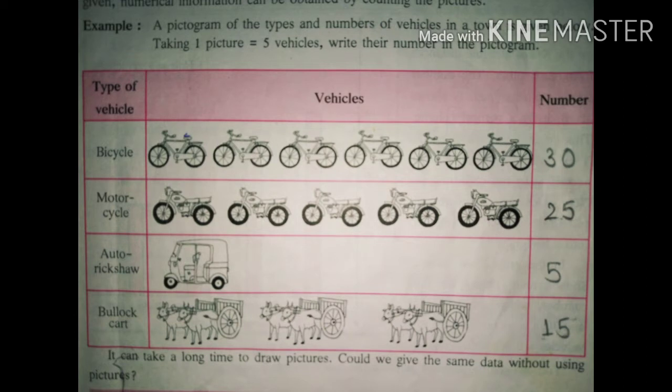Second, motorcycles. There are pictures of 5 motorcycles. So 5 into 5 is 25. There are 25 motorcycles.